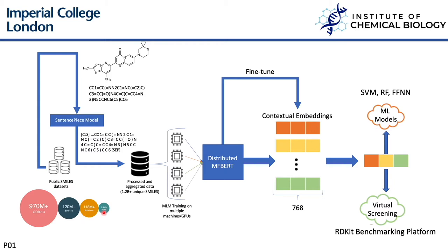We canonicalize each string in this dataset and then train a SentencePiece model on this dataset. This model splits the SMILES string into tokens in a data-driven manner. As a result we end up with over 1.2 billion unique SMILES which we perform distributed masked language modeling training on. This results in our model, MFBERT.